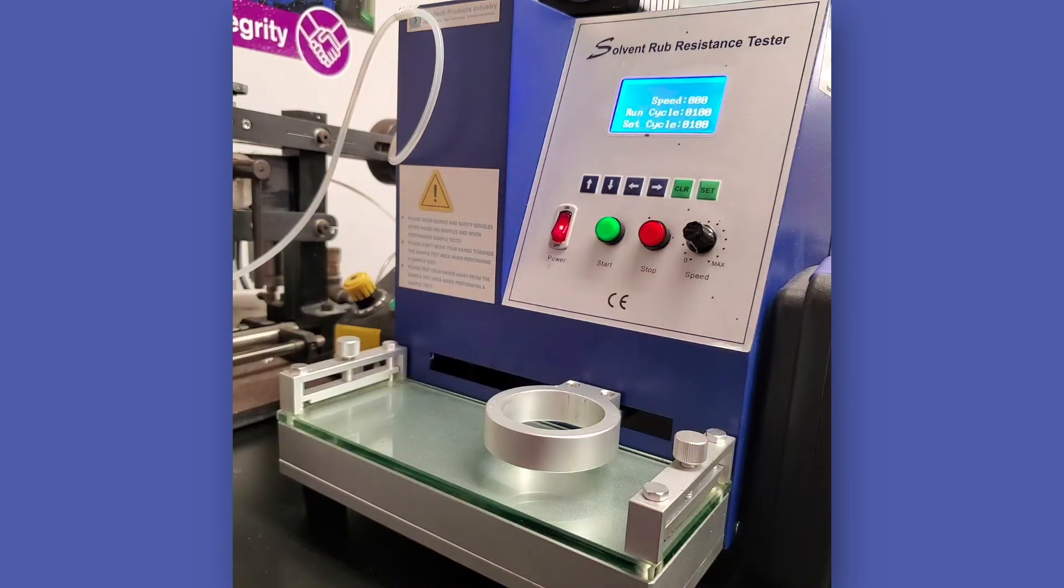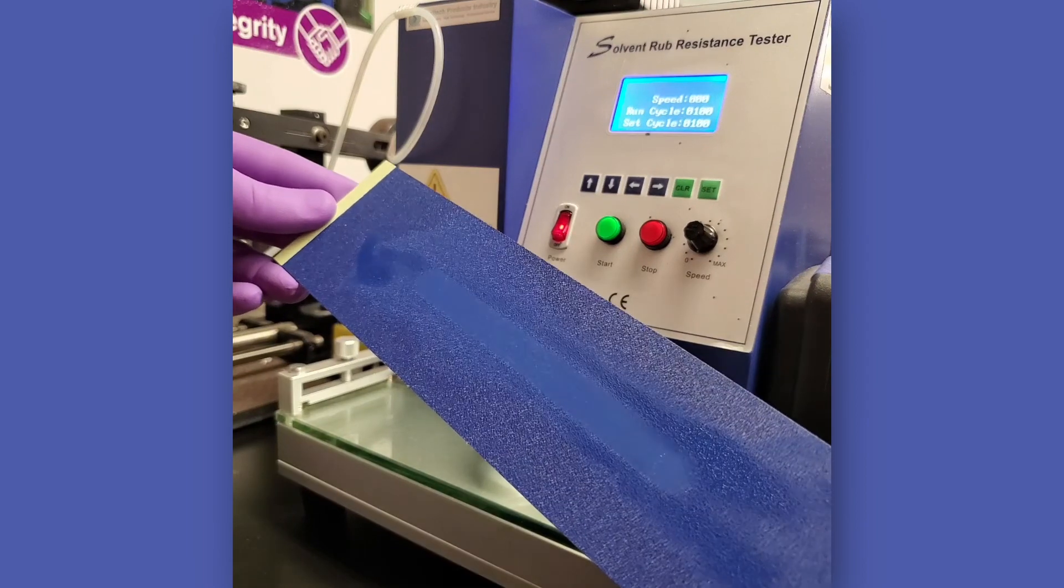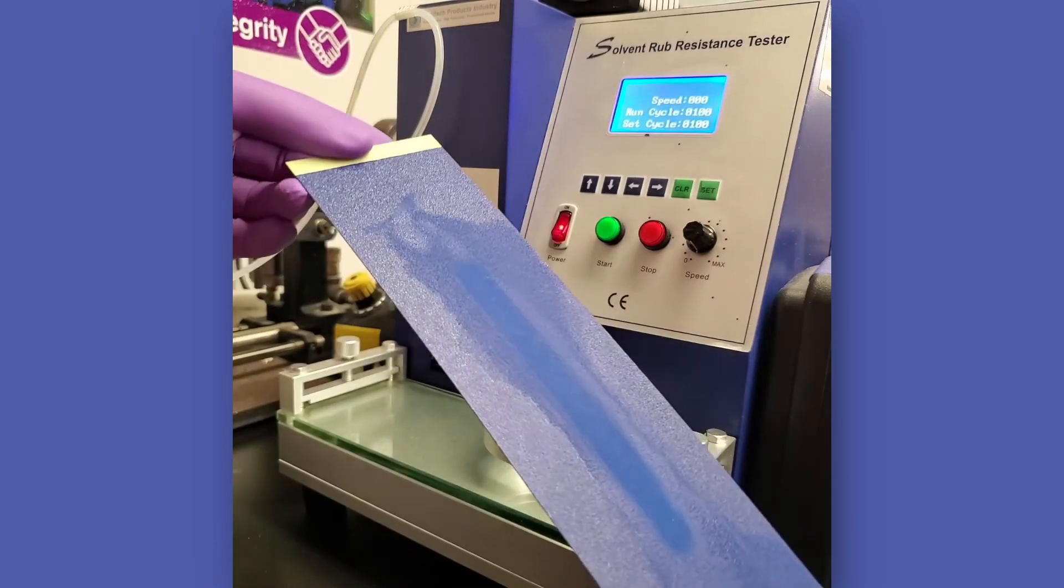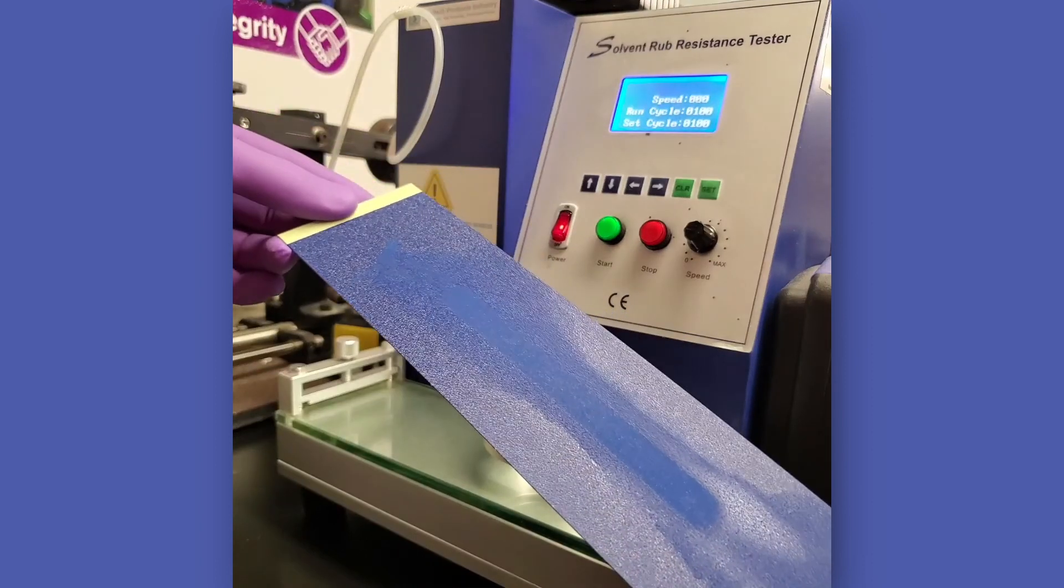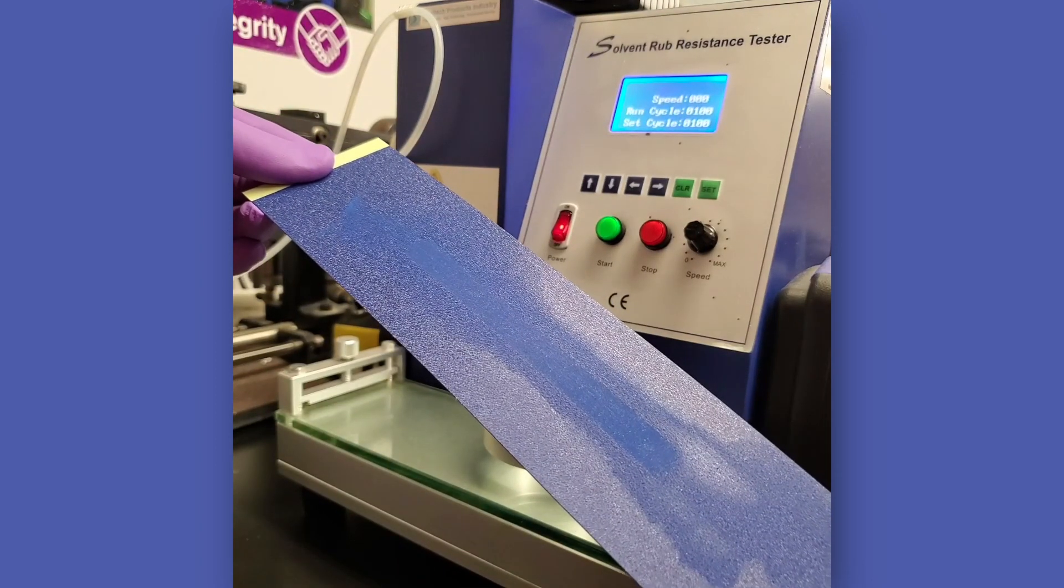In the second method, the machine is also allowed to run until the operator observes the appearance of the substrate or coating breakthrough. The number of double rubs on the machine counter is recorded. The second method may be more useful for research or cases where comparison of continuous data is desired.